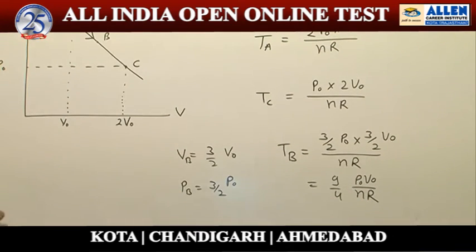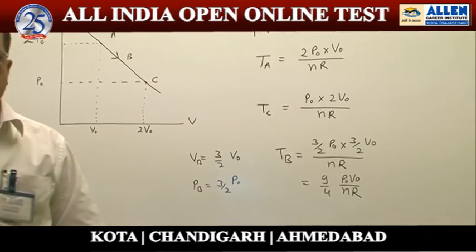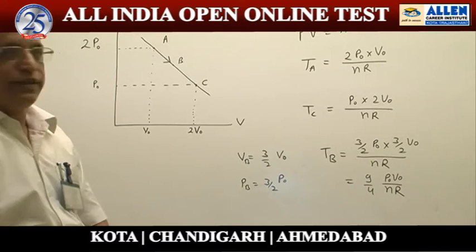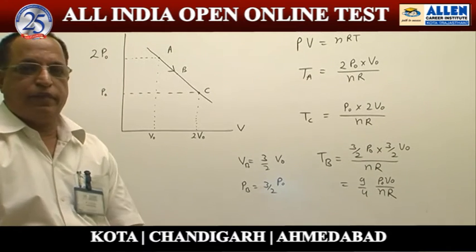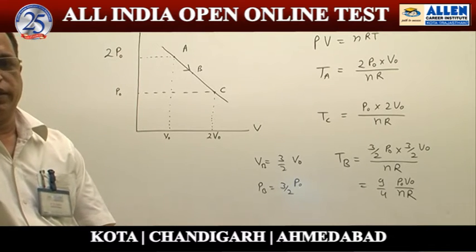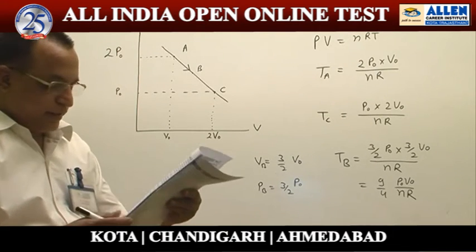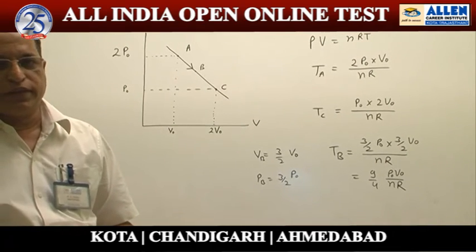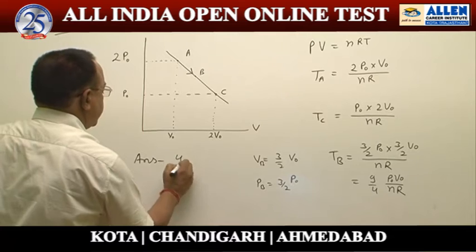So we can see that the temperature at points A and C is the same, whereas at point B the temperature is more than at points A and C. Therefore, option number 4 is the correct answer.